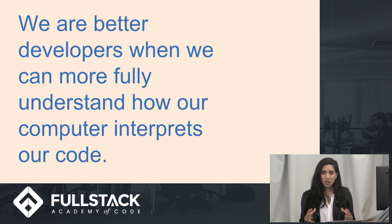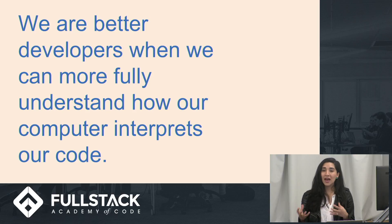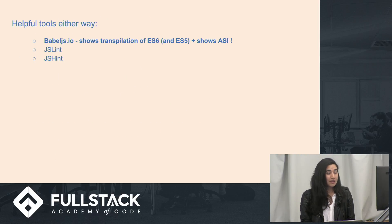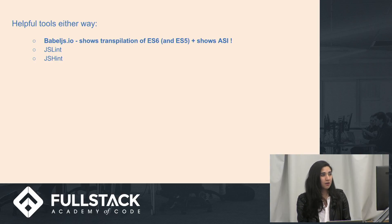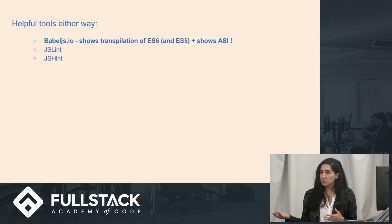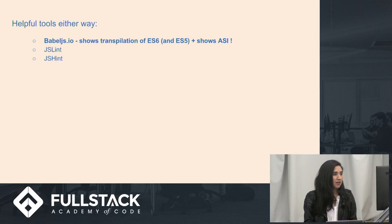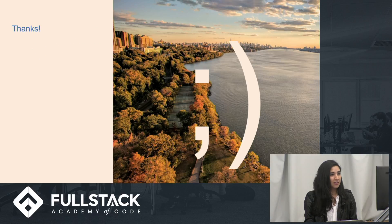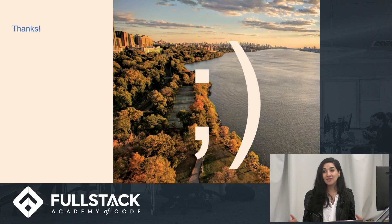We are better developers when we better understand the intricacies of how our code is being interpreted. Whether you're on either side of the argument, understanding automatic semicolon insertion is important. Helpful tools: Babel.js — you can put code on the left and see on the right not only the ES6 translation but also where semicolons are being inserted or interpreted. JSLint and JSHint are also helpful. That's the semi-deep dive into automatic semicolon insertion — I hope you learned a little bit more about these seemingly harmless little guys in your code.